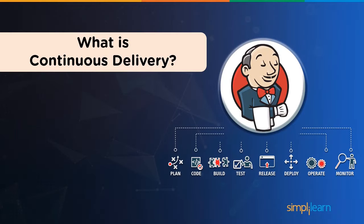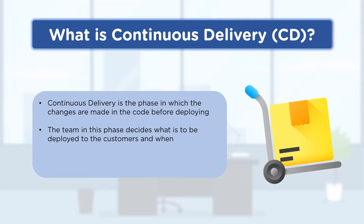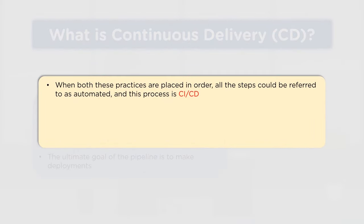Continuous delivery, also known as CD, is a phase in which changes are made to the code before deployment. It's about validating what exactly we want to deliver to the customer. The ultimate goal of the pipeline is to make the deployments — coding is not the only thing, it's all about how you perform the deployment. The final result is delivering to production and proceeding further.